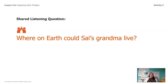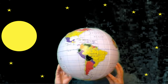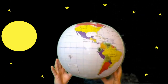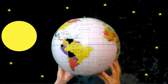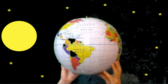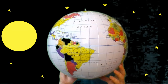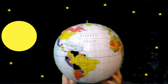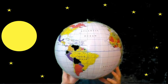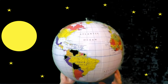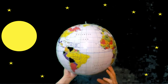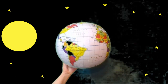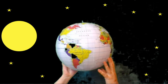Now that we know where Psy lives and which way the globe is facing for Psy to be having daytime, we need to figure out where his grandma could live. Let's go back out to the stars. I need your help with this next part too. So if that's Psy and he's pointing towards the sun so he's having daytime — where could his grandma live that would show she's having nighttime while he's having daytime? Here's Psy, he's having daytime. Where might his grandma be? Go ahead and point to all the places on the globe where Psy's grandma could be where she would have nighttime.